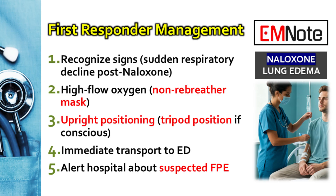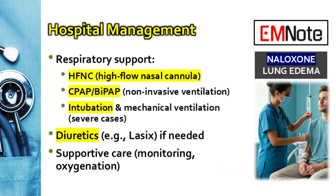So what do you do when you see this? Management comes down to aggressive respiratory support. In the pre-hospital setting, step one is recognizing what's happening — that sudden decline after naloxone. Immediately give the highest concentration of oxygen you have. If the patient is conscious, sit them upright to help with the work of breathing, and the goal is immediate transport to a hospital. Once in the hospital, care escalates. These patients often need high-flow nasal cannula or non-invasive ventilation like CPAP or BiPAP to help keep the alveoli open. For the most severe cases, intubation and mechanical ventilation might be needed, with continuous monitoring and supportive care.